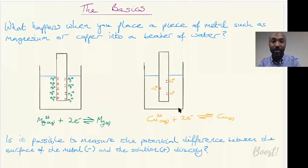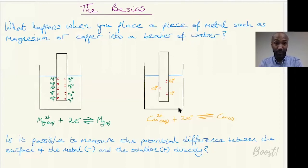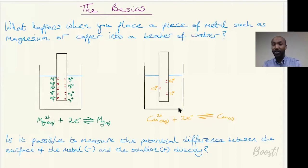The magnesium ions formed are attracted back to the surface of the metal because of the build-up of negative charge, and there is the possibility for these ions to gain an electron and become magnesium atoms again. So we have a reversible process and an equilibrium is reached. To measure the potential difference, you could imagine connecting the metal to a voltmeter, but this is very problematic and will not give you the actual potential difference - it is not possible to measure it directly.